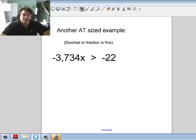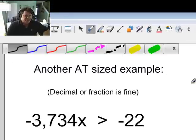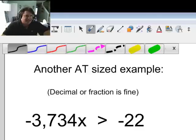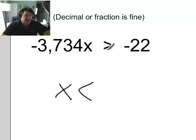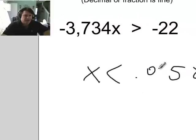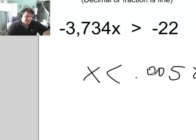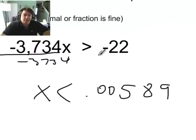Another AT size example. Go ahead and try again. -3734x is greater than -22. And go ahead and try. See what you get. Now, in this case here, did you get the following? x is less than because you have to switch the sign. 5, 8, 9. See, .00. I'm getting .00589. And that becomes a positive because two negatives make a positive. The sign switches. Now, if you had something like, if you had this, 3734 divided by 22. If you got 169, it's because you took this divided by this. But remember, you have to divide this by -3734. Top divided by bottom. Don't let your brain trick you. It should be a decimal.